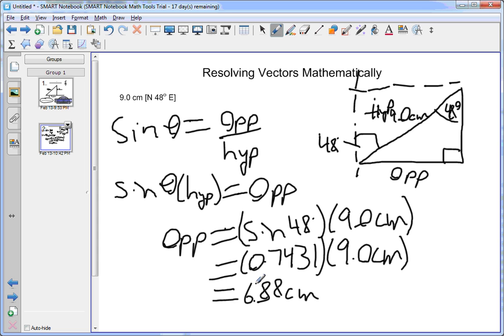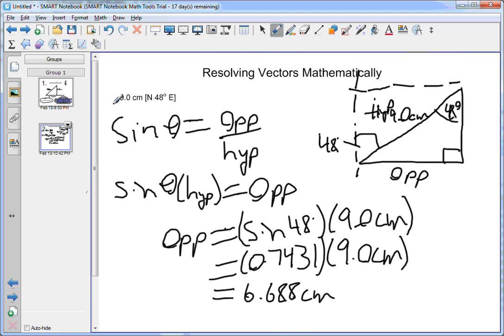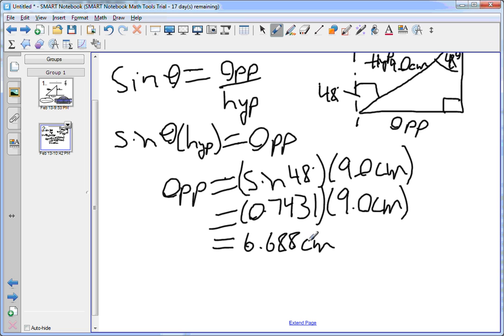Sorry, that's not right. That's 6.688 centimeters. And we know that in our question, our distance has two significant figures. Our angle has two significant figures. So our final answer must have two significant figures. And that would be 6.7 centimeters.